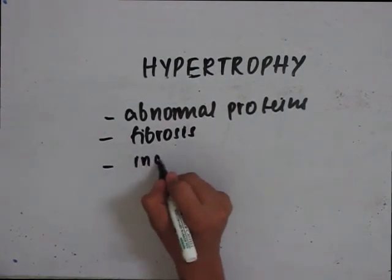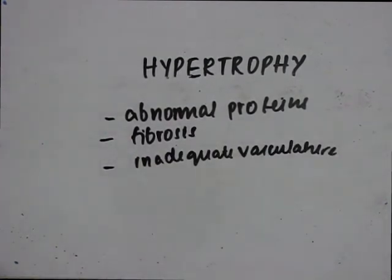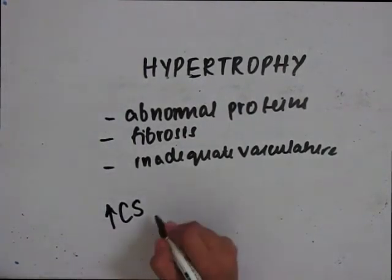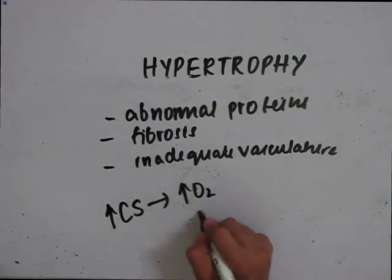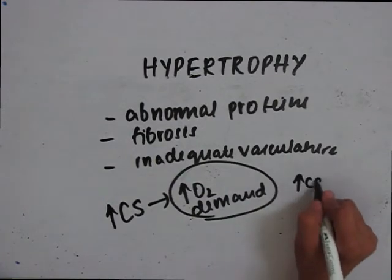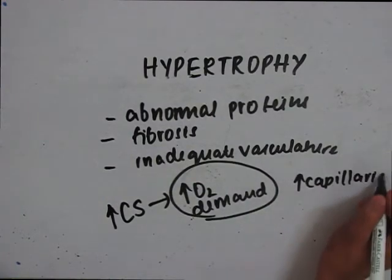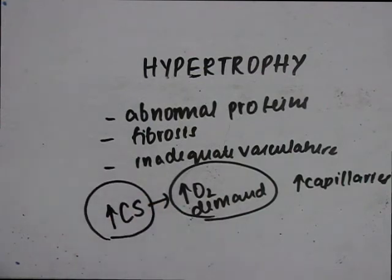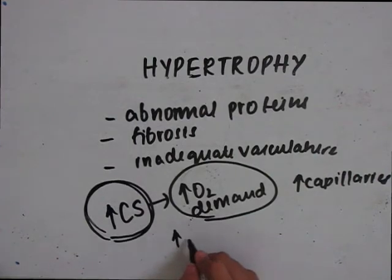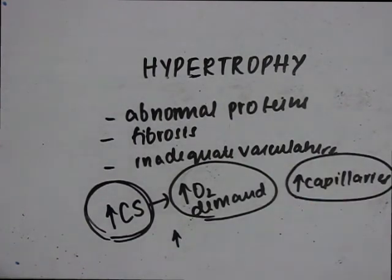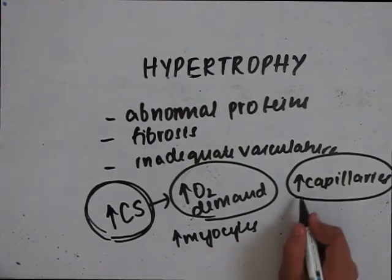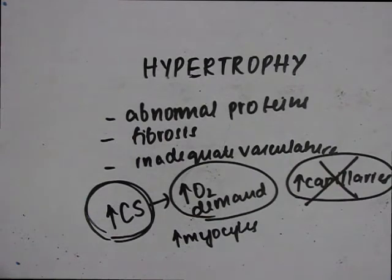When the cardiac size is increasing in hypertrophy, there is increased oxygen demand. In order to fulfill this oxygen demand, there needs to be more capillaries. But in case of cardiac hypertrophy, there is increase in cardiac size but no sufficient increase in capillary density. So there is increase in number of myocytes but no capillaries, and that seems to be a problem.